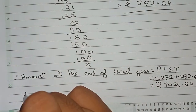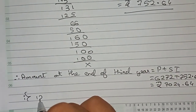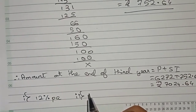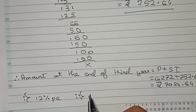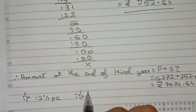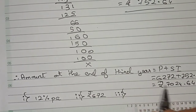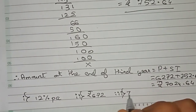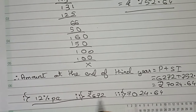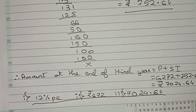So to summarize all the answers: number one, the rate of interest per annum is 12%. Number two, the interest in the second year is rupees 672. Number three, the amount at the end of the third year is rupees 7024.64. Thanks for watching this video — please subscribe to my channel for more solutions.